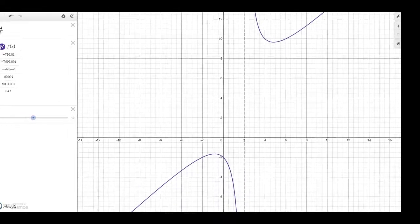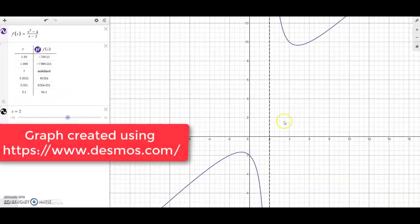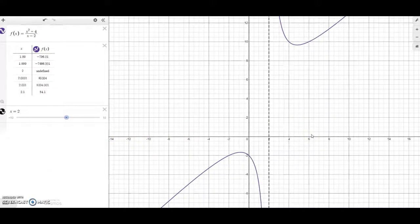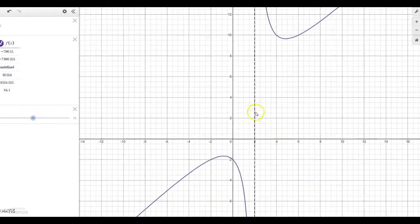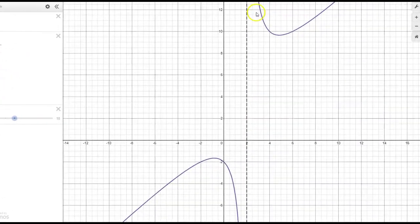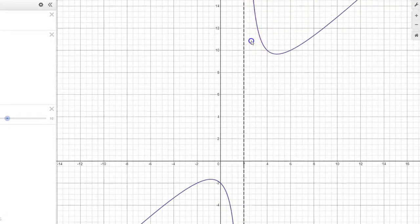So notice I've graphed the function, x squared plus 4 over x minus 2, and we see the graph over here. So let's think about what happens to this function as the input quantities get closer and closer to 2. If we look up at the graph, we do indeed see that that graph just seems to be heading upwards off to infinity.